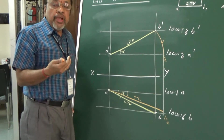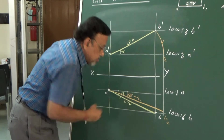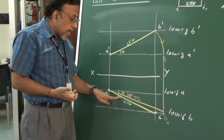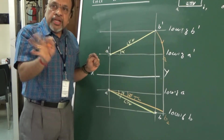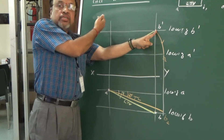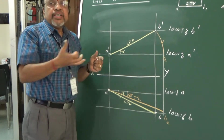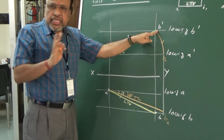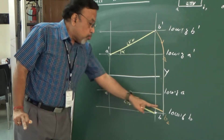This line gives the true length, and the angle it makes is the true angle phi. Remember, the true length is always accompanied by the true angle. Here phi is less than the apparent angle. Note that instead of fixing a and rotating b, you can also fix b and rotate a — either way you get the same solution.